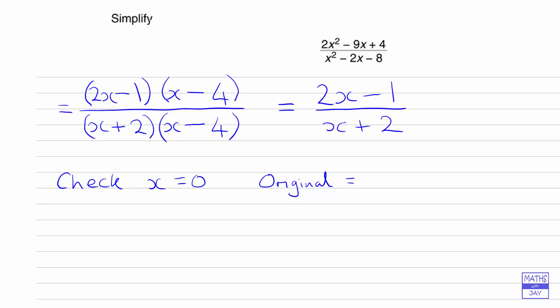When x is 0, the original is going to be 0 minus 0 plus 4, so 4 over 0 minus 0 minus 8, which is 4 over minus 8. That's equal to negative 1 half. Our answer gives 2x minus 1 over x plus 2, which when x is 0 is minus 1 over 2. We can see that this works for x is 0.